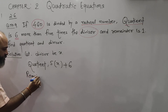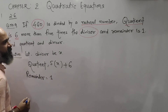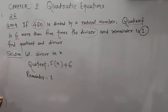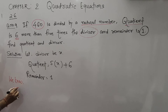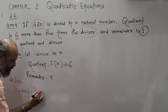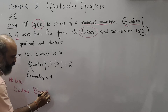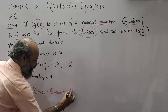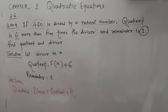And what is the remainder? Remainder is 1 — this is given. Now we know that dividend is equal to divisor into quotient plus remainder.